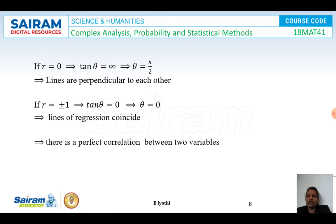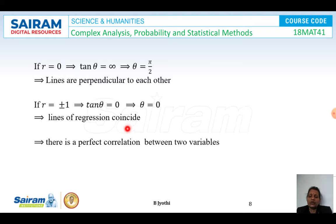If r equals 0, tan(theta) is infinity, which implies theta equals 90 degrees — so the lines of regression are perpendicular to each other. If r equals plus or minus 1, tan(theta) equals 0, which implies theta equals 0 — so the lines of regression coincide, indicating perfect correlation between the two variables.